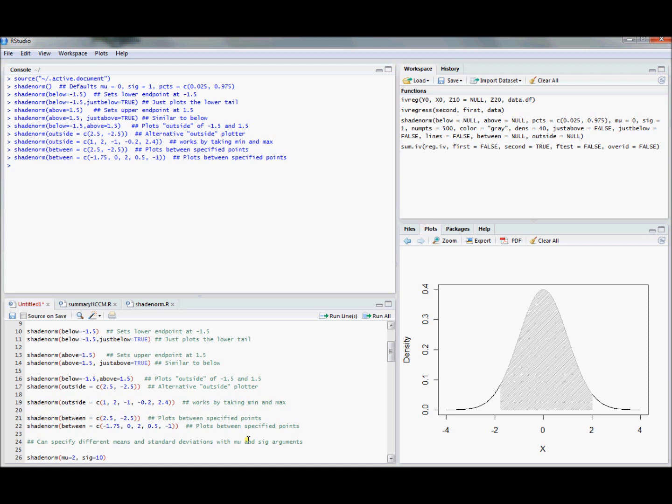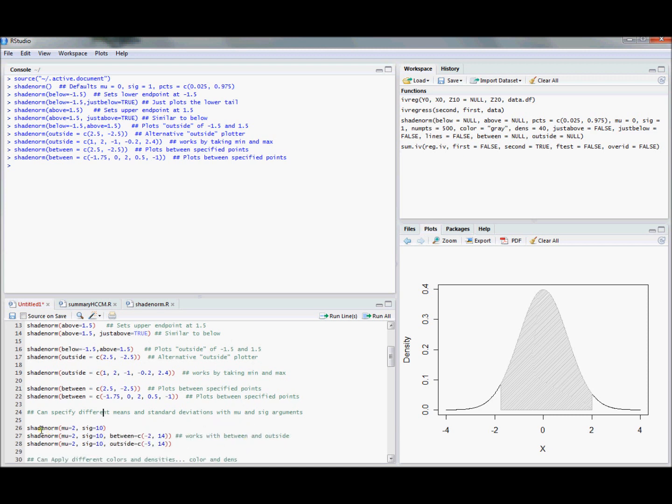But you might not want to work just with the standard normal. Turns out the mu and the sig commands will allow you to specify the mean and the standard deviation of the normal density that you'd like to illustrate. Here's the default above, below, but we changed the mean to 2 and the standard deviation to 10.